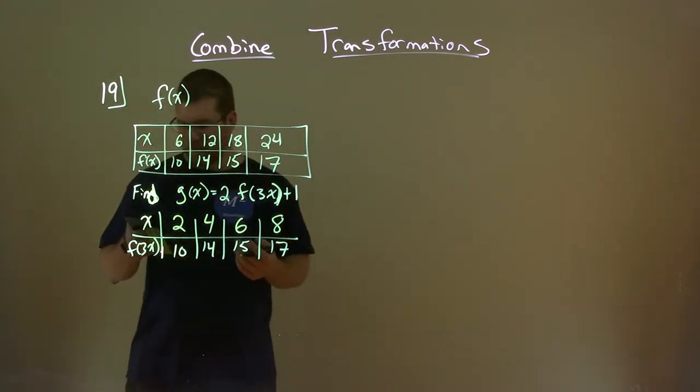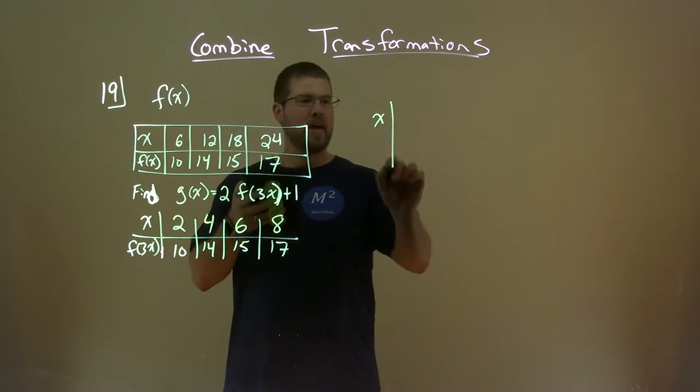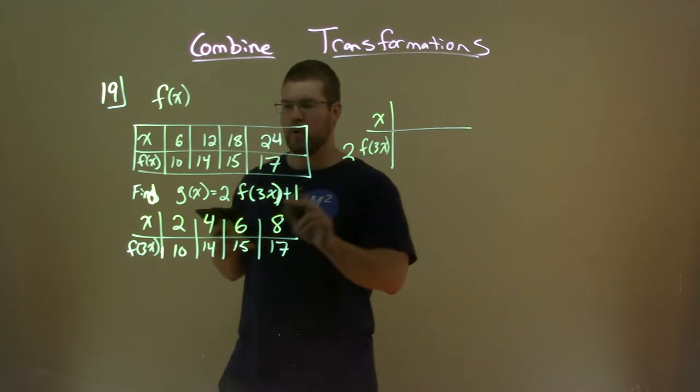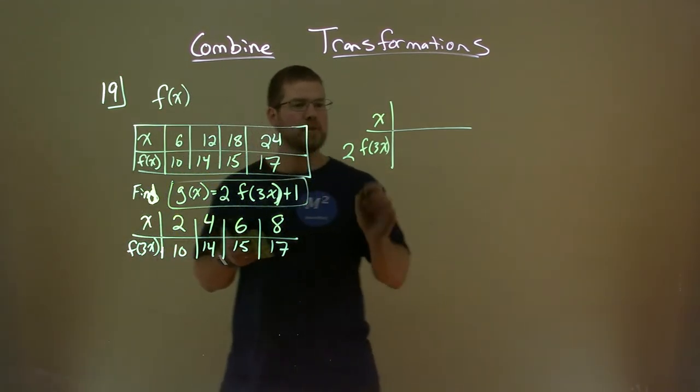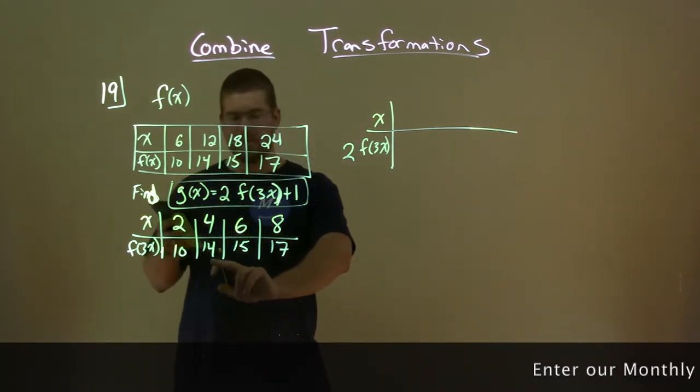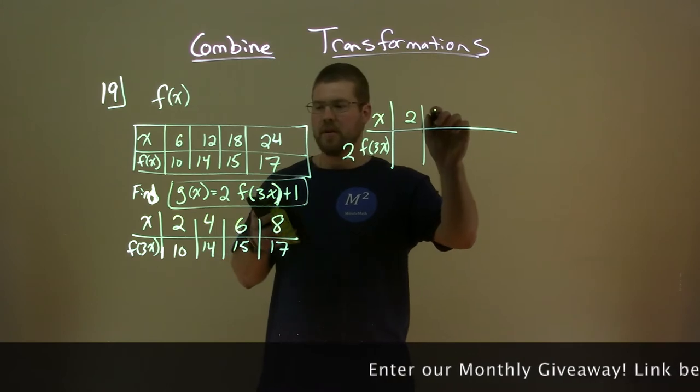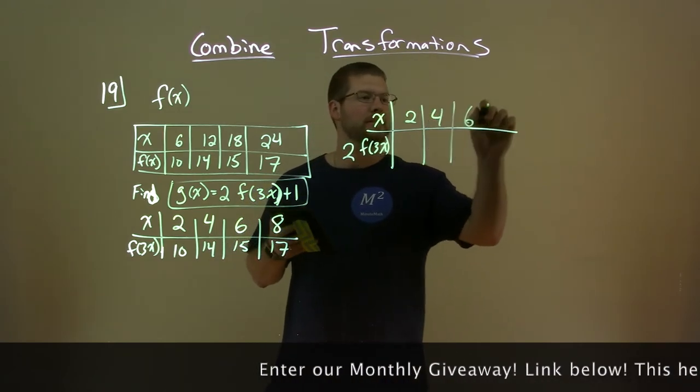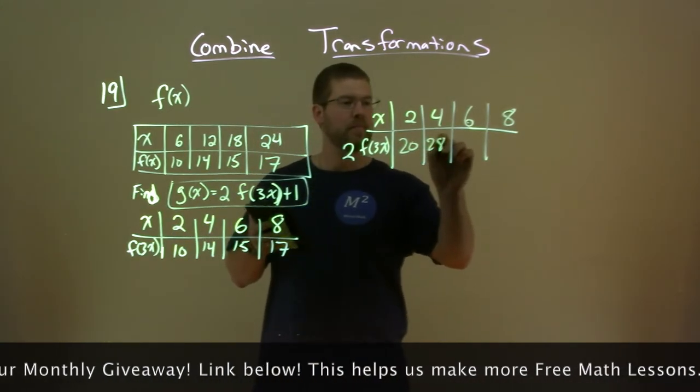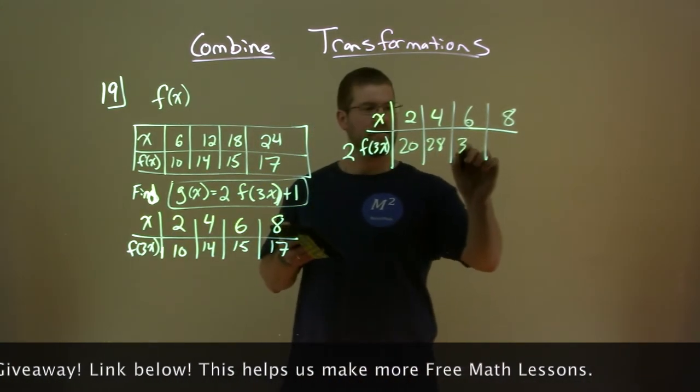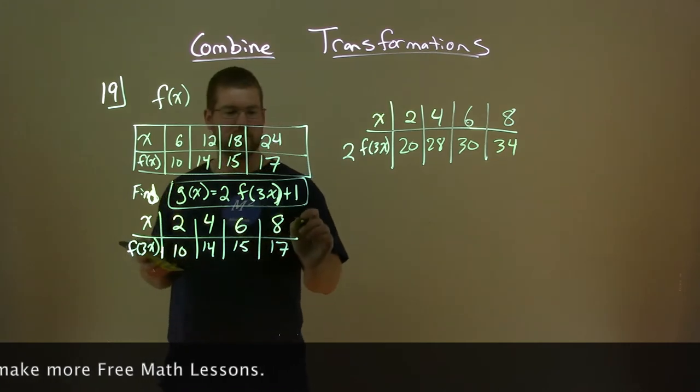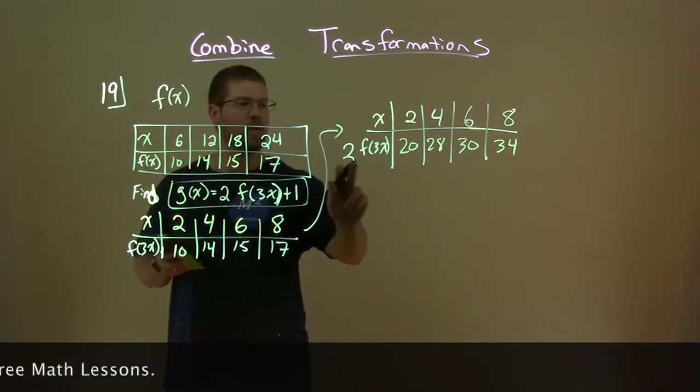Let's keep this going. What about the next part, 2 times f(3x)? So we have that table there. We're going to use that and multiply the outputs now by 2. Inputs are 2, 4, 6, 8. And the outputs doubled: 20, 28, 30, and 34. We've doubled those. We're transitioning from this table to this one, applying a little bit more.